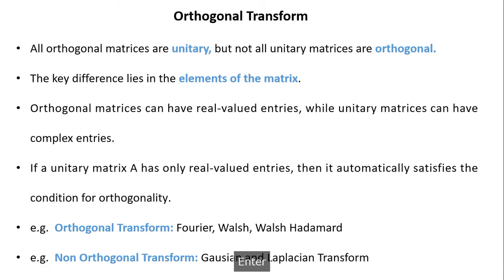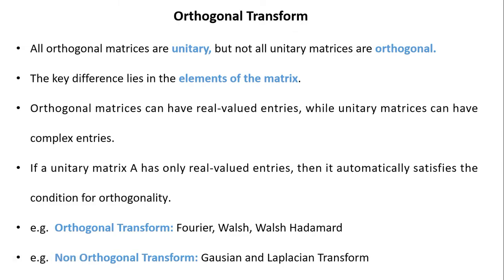Therefore, the Walsh transform is also a unitary transform. Now, orthogonal transforms: all orthogonal matrices are unitary, but not all unitary matrices are orthogonal. The key difference lies in the elements — orthogonal matrices have real-valued entries, while unitary matrices can have complex entries. If a unitary matrix has real-valued entries, it automatically satisfies orthogonality. If it contains a combination of real and complex, it may or may not be orthogonal. Examples of orthogonal transforms: Fourier, Walsh, and Walsh-Hadamard. Non-orthogonal transforms include Gaussian and Laplacian.